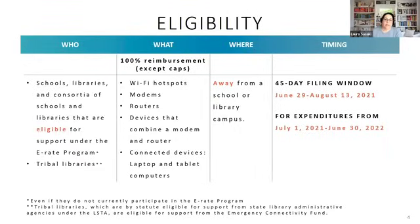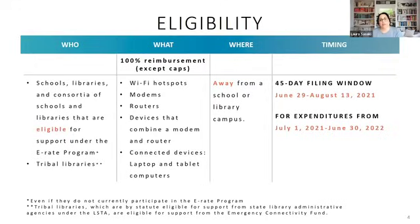What is eligible is 100% reimbursement, with caps, for: Wi-Fi hotspots, routers, modems, devices that combine a router and modem, and connected devices — specifically laptop and tablet computers. Eligibility is specifically for use away from a school or library campus. For Window One, the first filing window for new services, it's a 45-day window open June 29th and closing August 13th, 2021 at 11:59 PM Eastern Time. Expenditures covered are from July 1, 2021 through June 30, 2022.